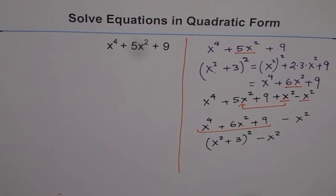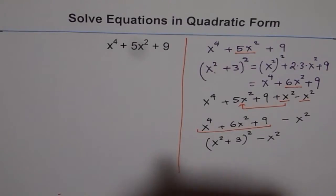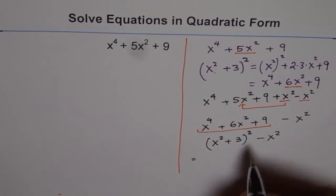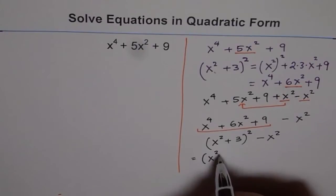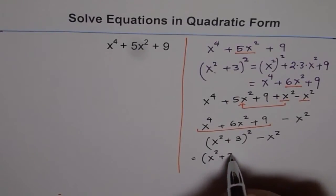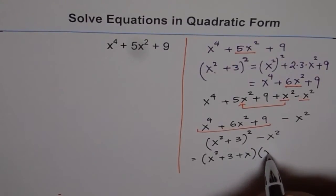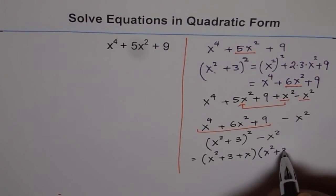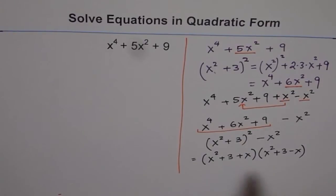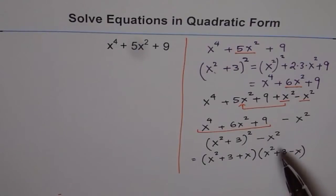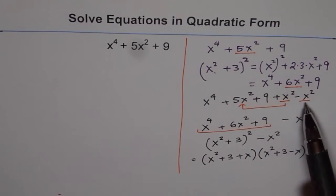So we can write this as x squared plus 3, whole square, minus x squared. This looks like a squared minus b squared, which could be written as a plus b times a minus b. So now I can write this as x squared plus 3 plus x, times x squared plus 3 minus x. I have factored my expression, which seemed very difficult to factor, by this little trick. That is a very important technique.